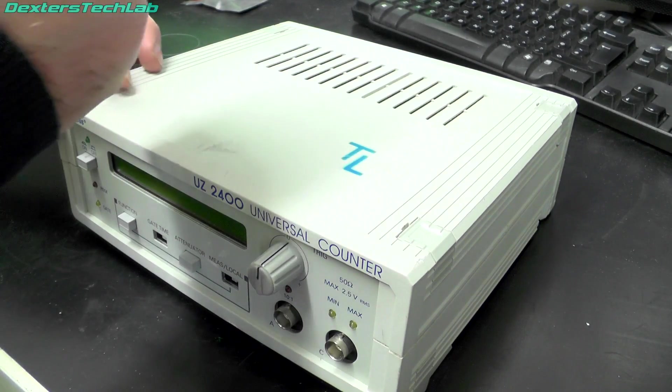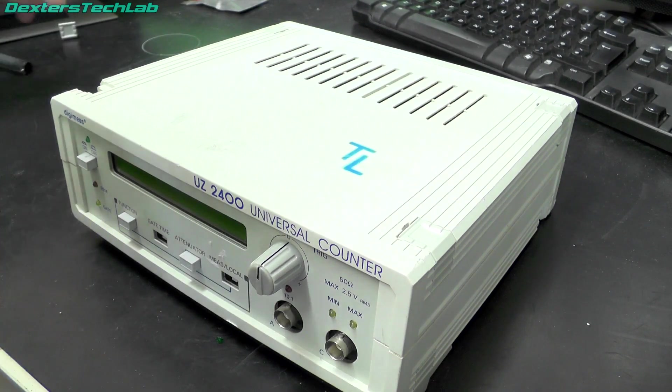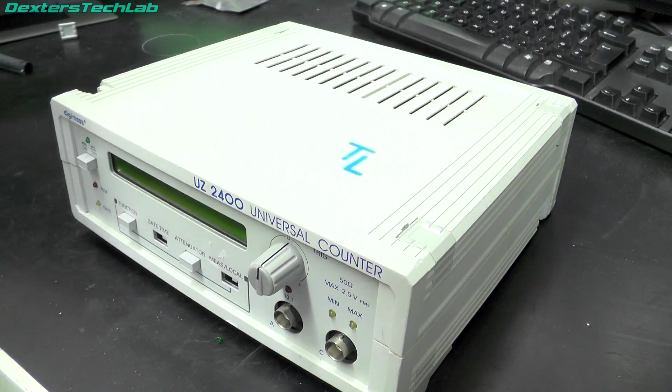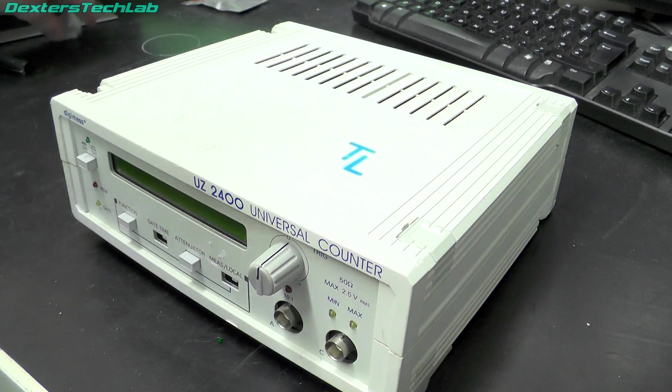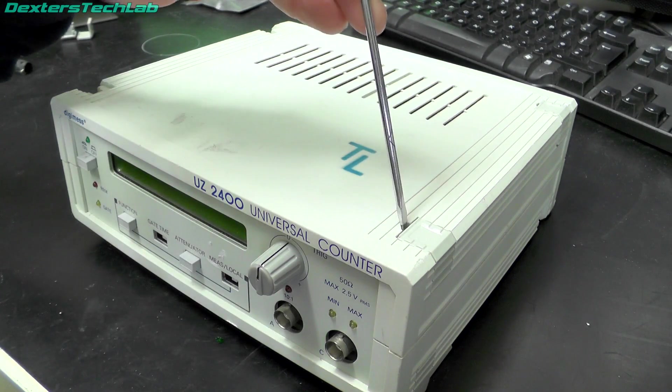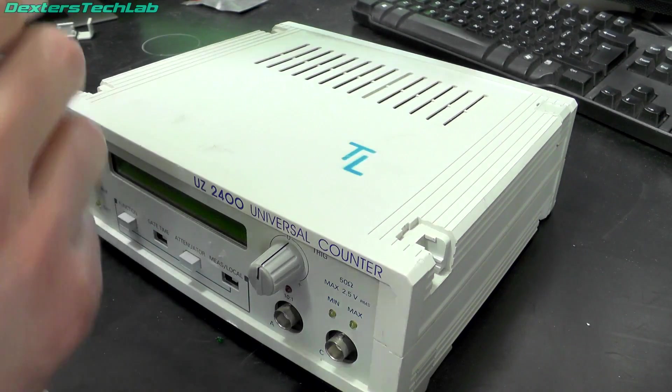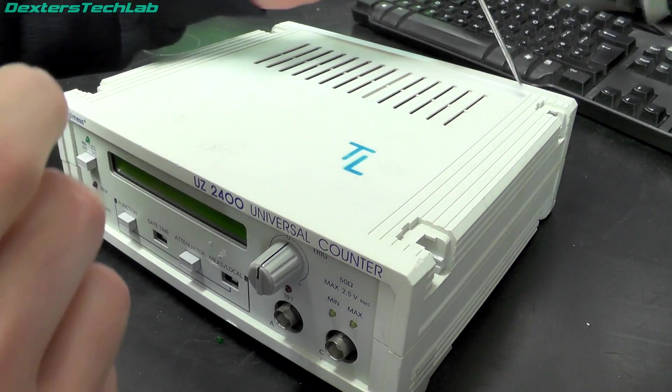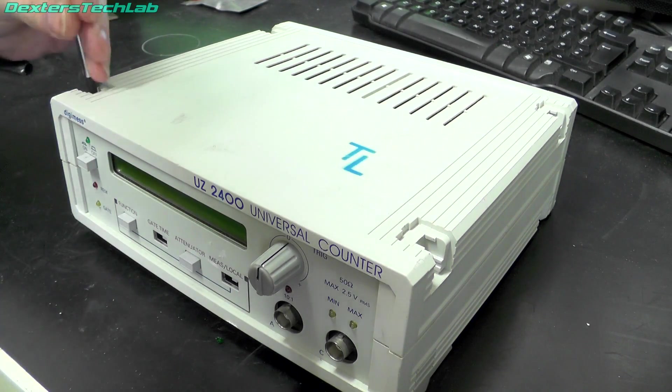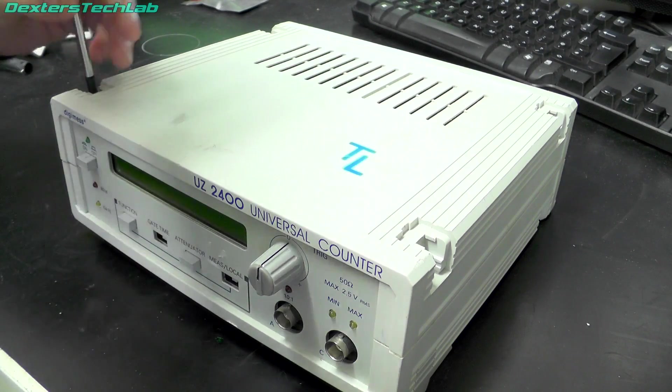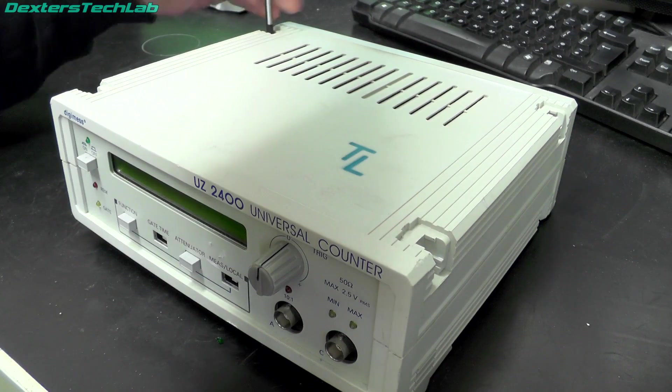So according to the spec sheet on this it is a 2.4GHz counter with an oven controlled oscillator in it. So it should be pretty good. I think the top just comes off. I think the screws are just underneath here. But in terms of the actual functions on the front it does seem pretty basic, so it'll be interesting to see what it's like when we turn it on.